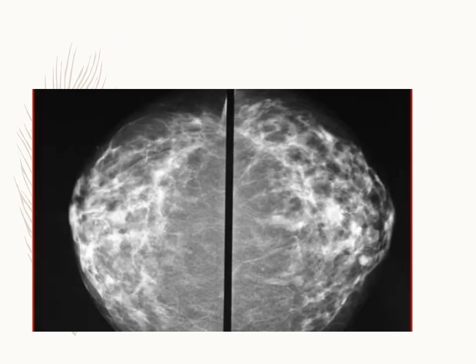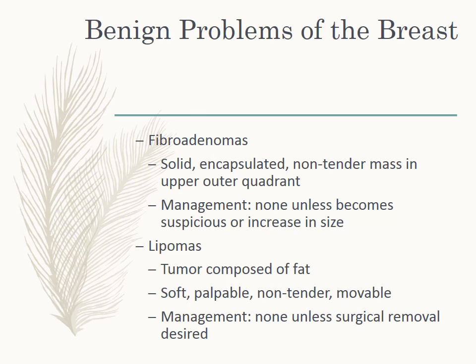Fibroadenomas are solid encapsulated non-tender masses in the upper outer quadrant. Management is none unless it becomes suspicious or increases in size. Diagnosis is made by history and physical, mammography, ultrasound or MRI, fine needle aspiration, or surgical excision may be necessary. Lipomas are fatty tumors on the chest wall that usually occur after the age of 45 — they're soft, palpable, movable, and non-tender masses. Management is none unless surgical removal is desired.